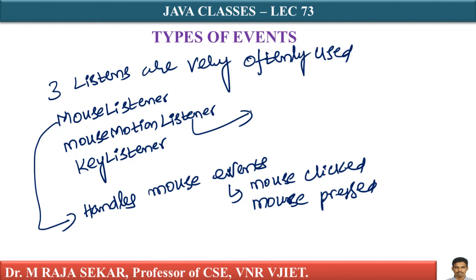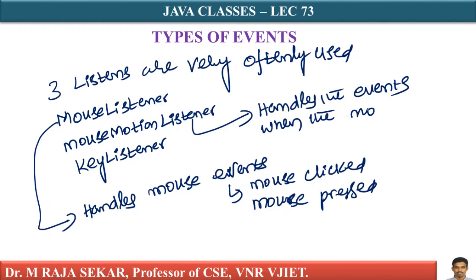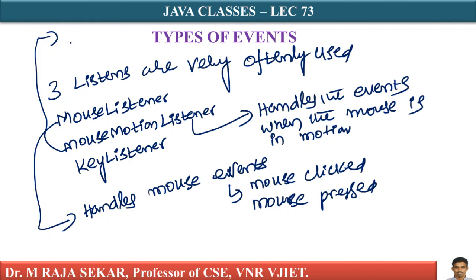MouseMotionListener handles the events when the mouse is in motion. When the mouse is in motion, like mouse dragged and mouse moved - these are the events handled by MouseMotionListener.